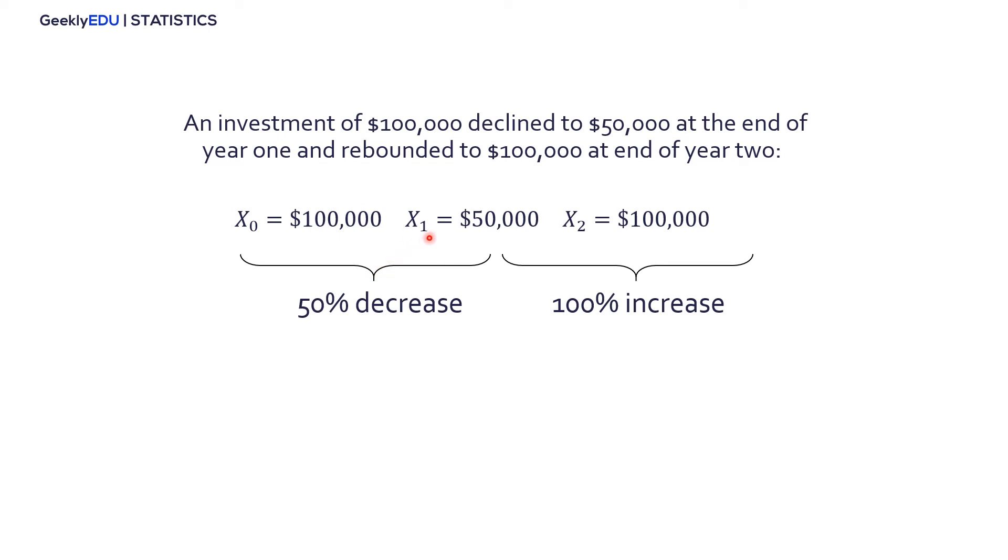So, x sub 0 in this case is our starting point or what is our investment, which from the problem is $100,000. x sub 1 now is the number of years that the investment is worth. So, as the problem says, at the end of year 1, the investment is only worth $50,000. And at the end of the second year, or x sub 2, it went back up to $100,000.